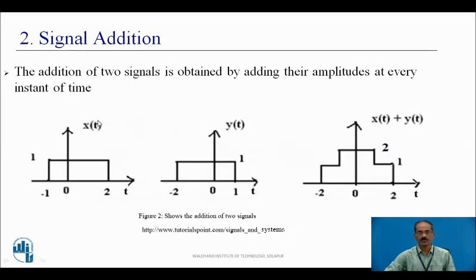Signal addition: to perform signal addition, at least two signals are required. The addition of two signals is obtained by adding their amplitudes at every instant of time. Given x(t) with amplitude equal to 1, which varies from −1 to 2, and another signal y(t) with amplitude equal to 1, which varies from −2 to 1. We shall see the corresponding x(t) + y(t) at every instant of time.